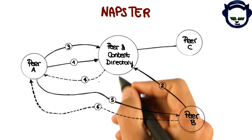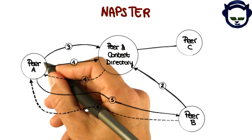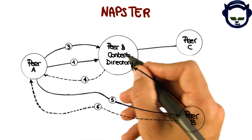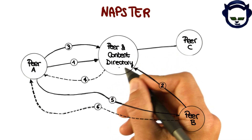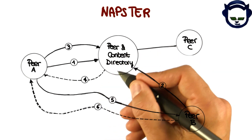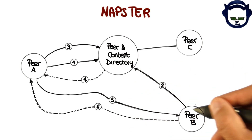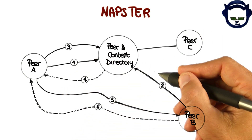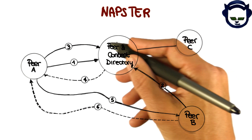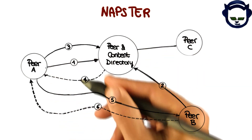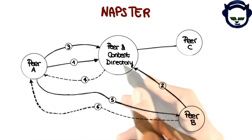But now we're at the point where things start to change a little bit. After peer A has requested the song, the content directory will look up its gigantic index and will see that peer B actually has the song that peer A requested. So it will send to peer A a handle that peer A can use to connect directly to peer B.